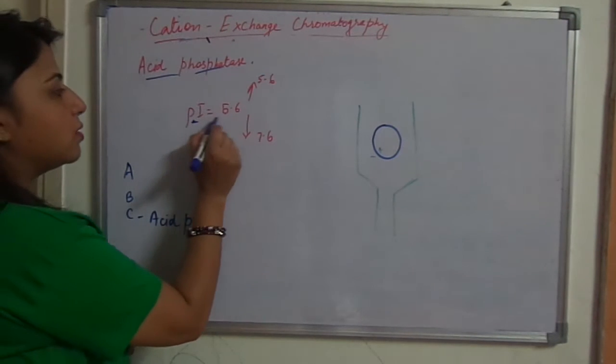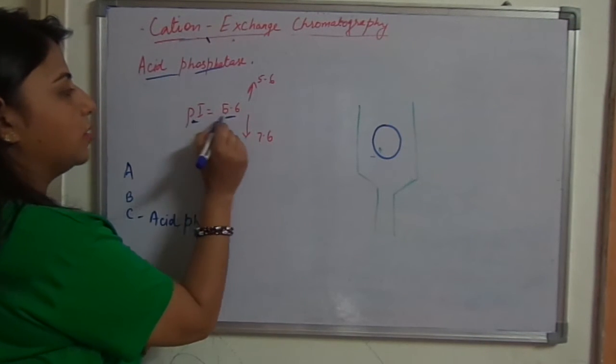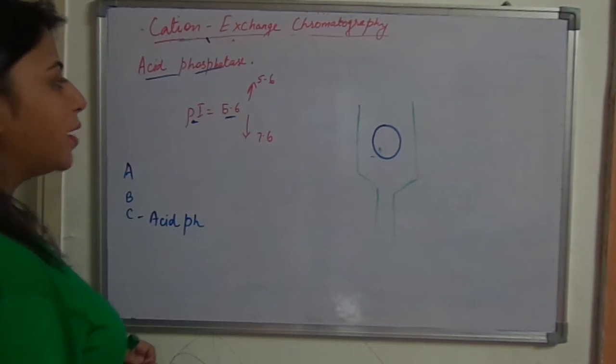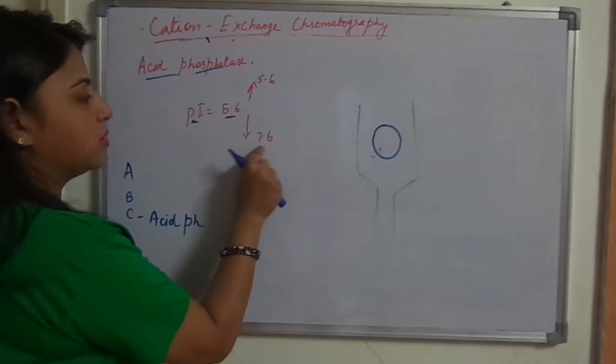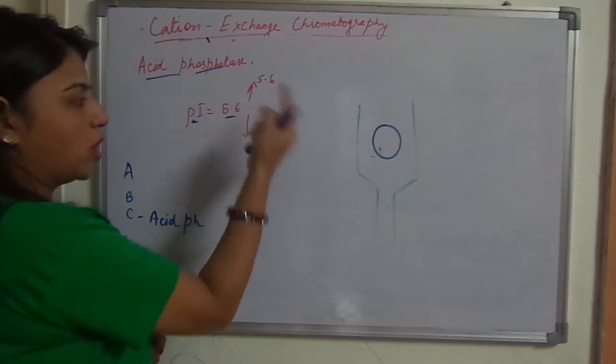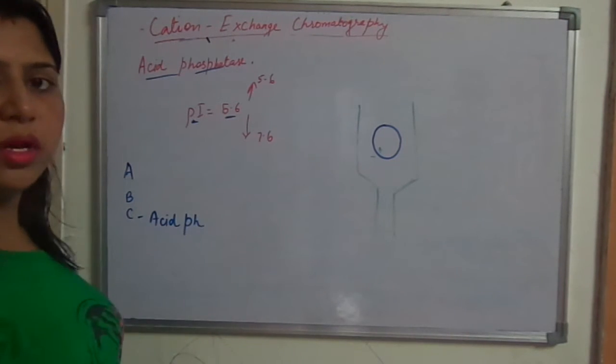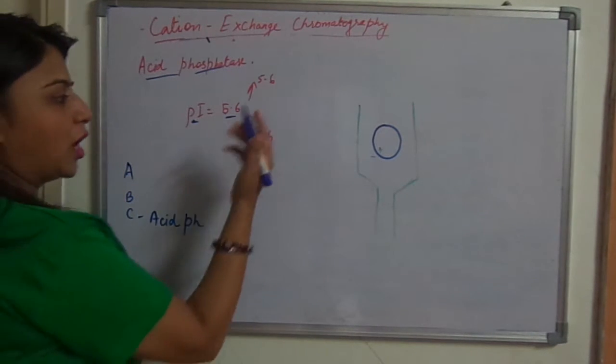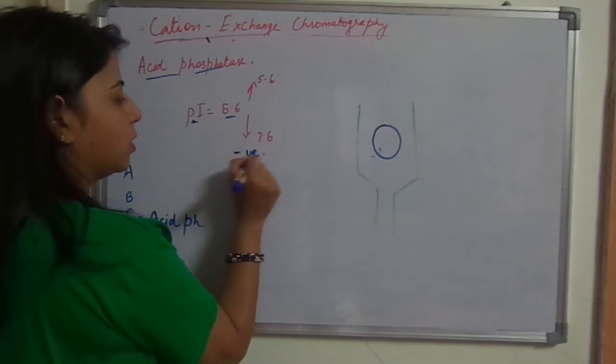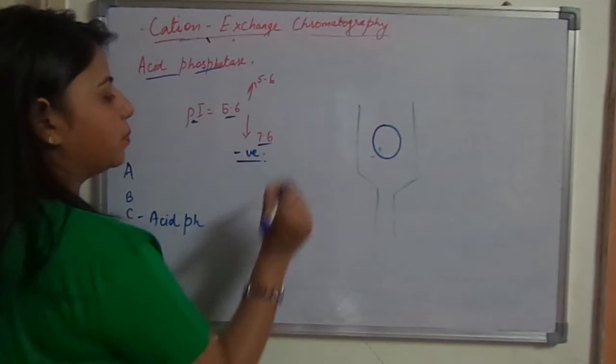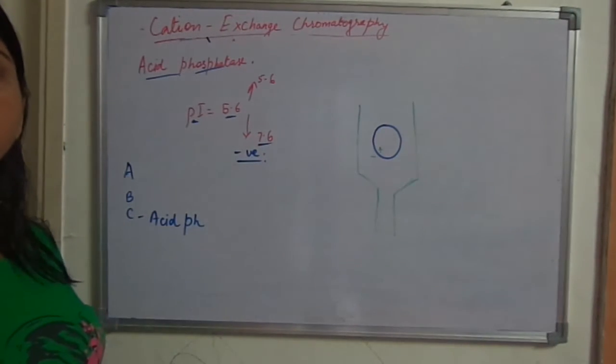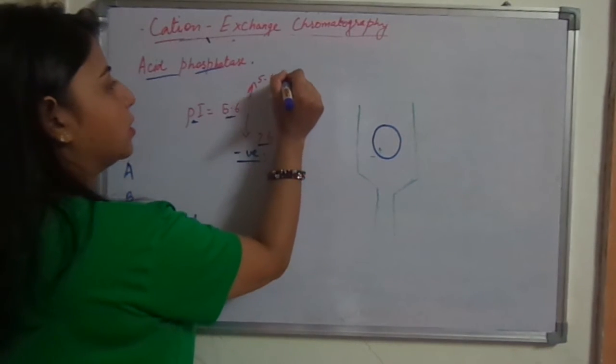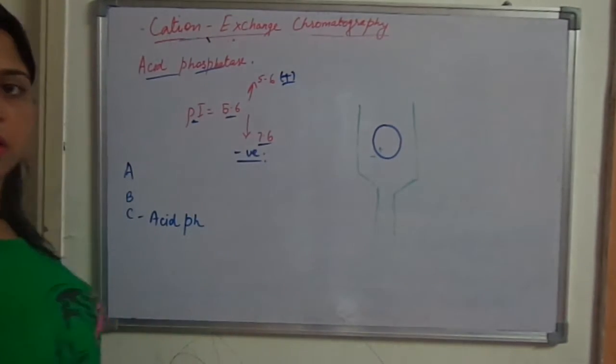Now acid phosphatase has a pI, the isoelectric point, 6.6. So at pH greater than 6.6, that is say 7.6, one pH above or one pH below that group. So at pH 7.6 its charge will be negative. So then acid phosphatase at pH 7.6 will become an anion. At pH 5.6 it will become a cation, it will be positive.